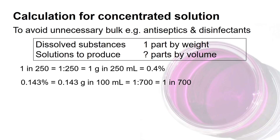To express that in terms of percentage weight in volume, 1 in 250 is equal to 0.4% w/v. You must be able to convert between each of these units — from percentage to expressions in terms of ratio or parts in parts.